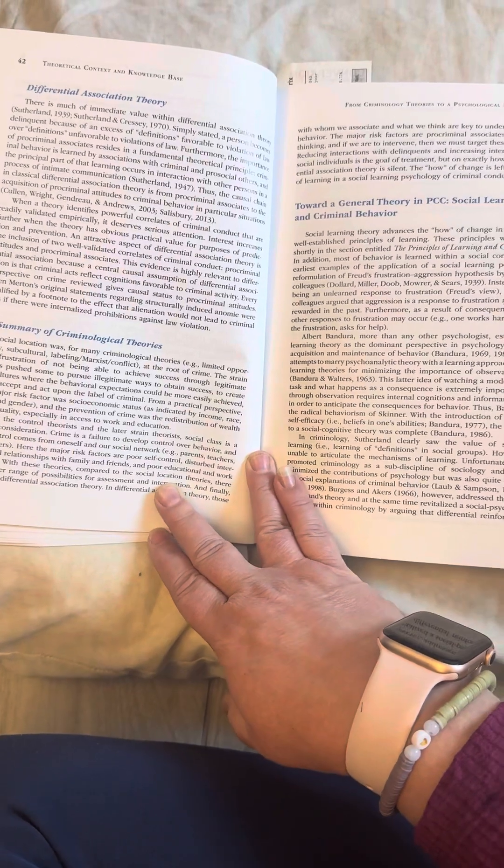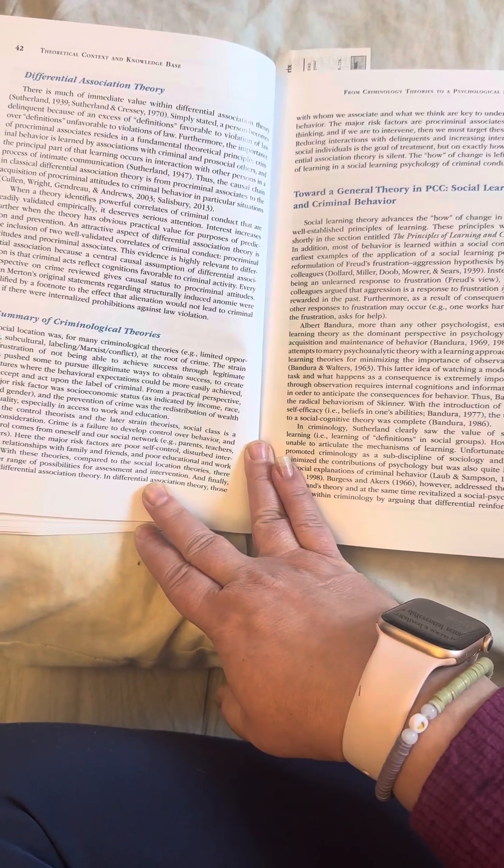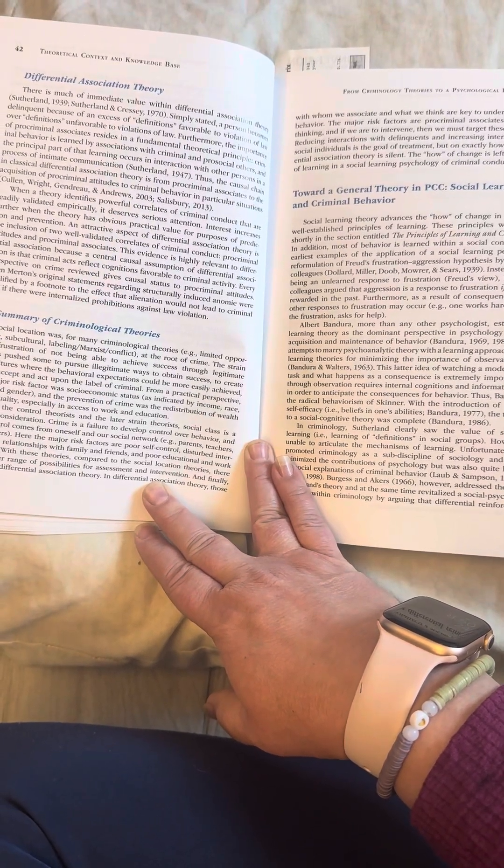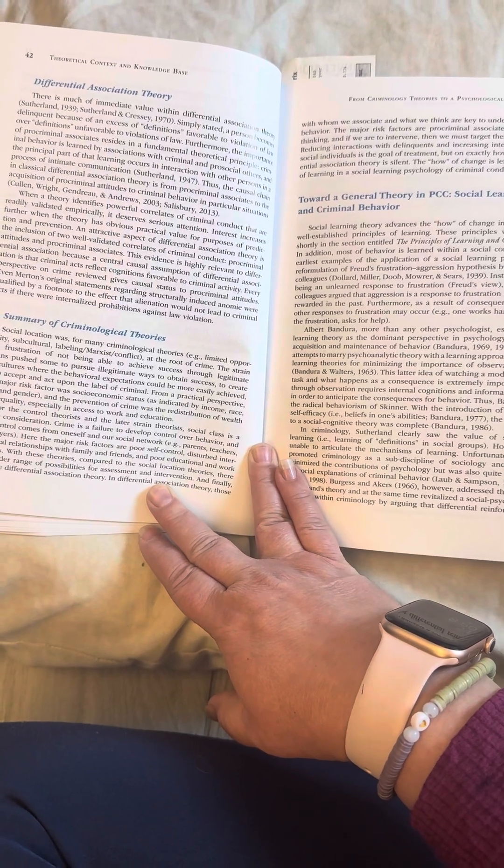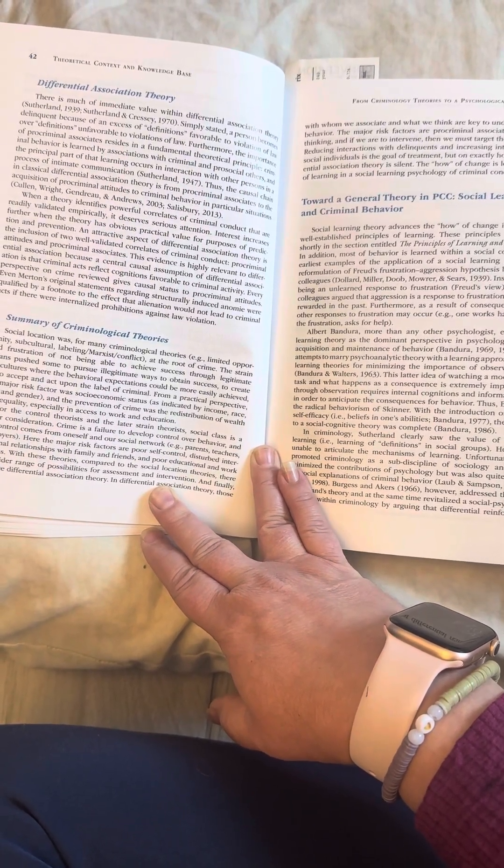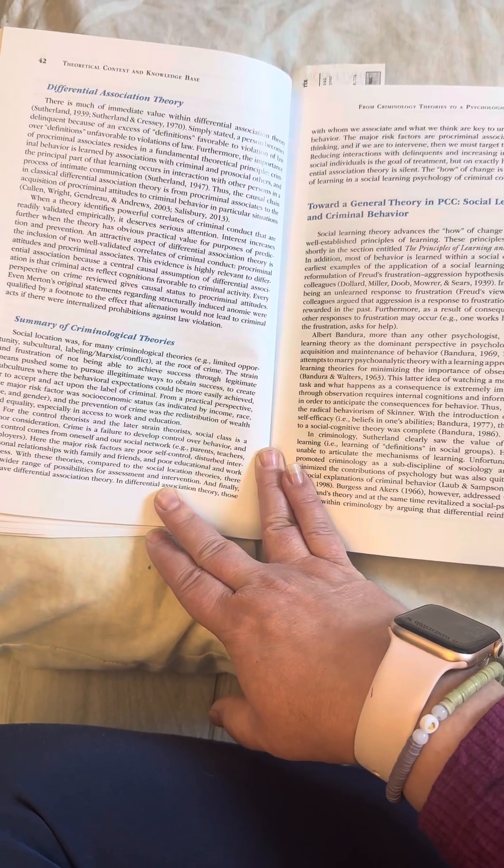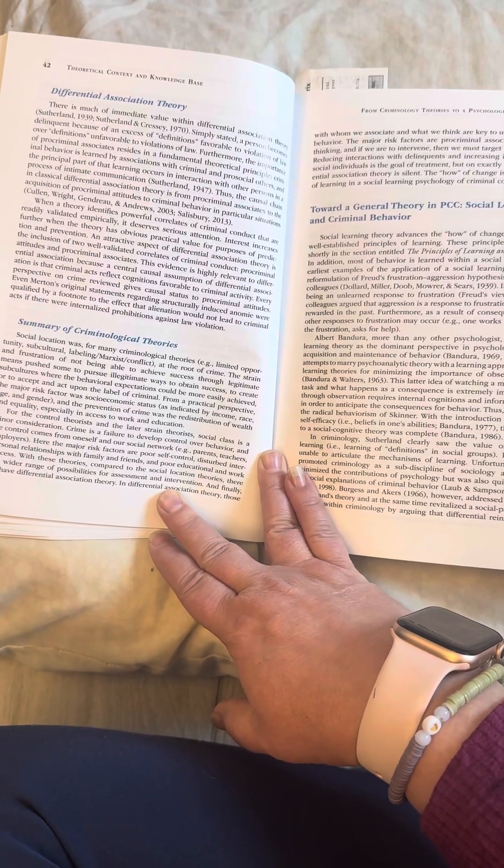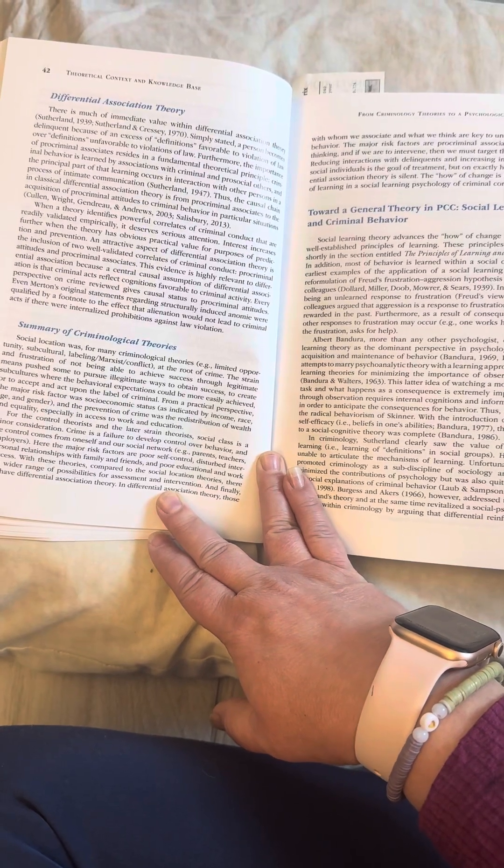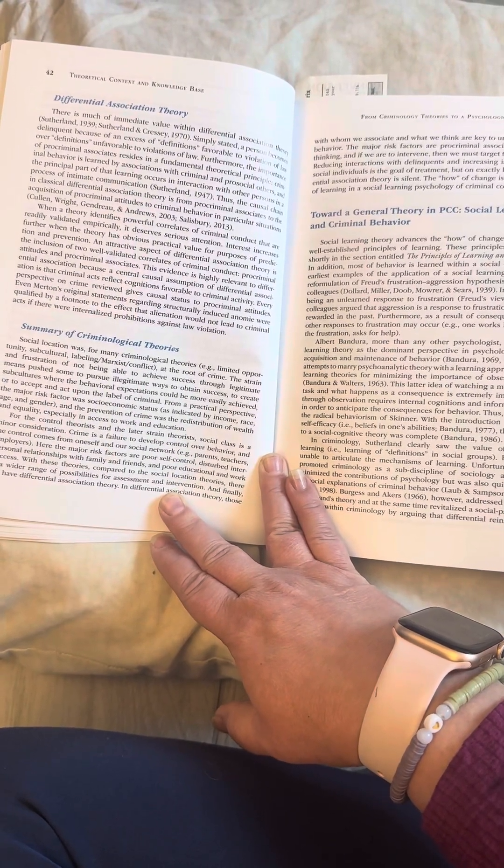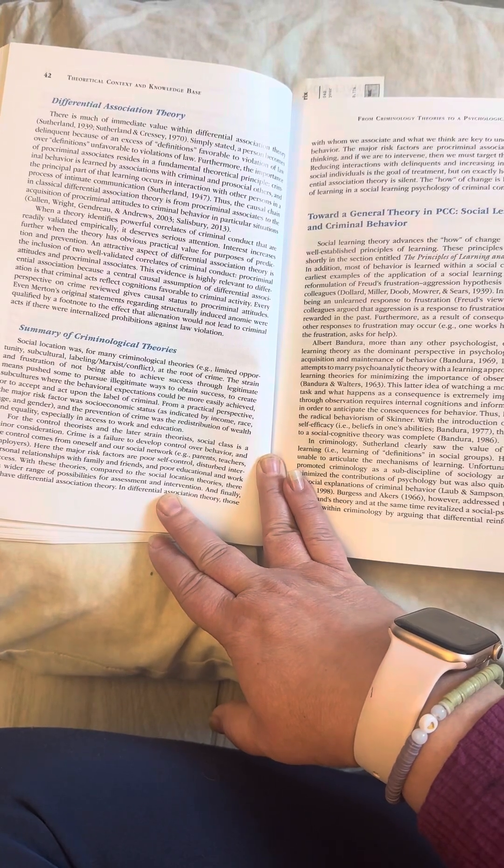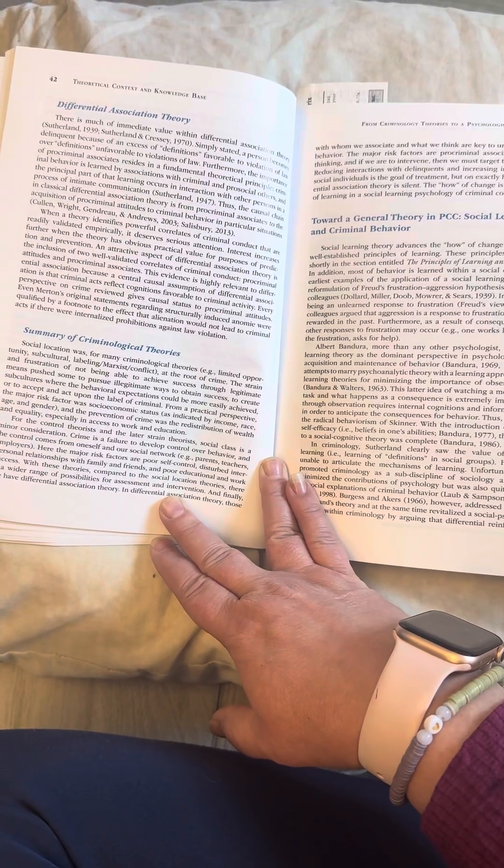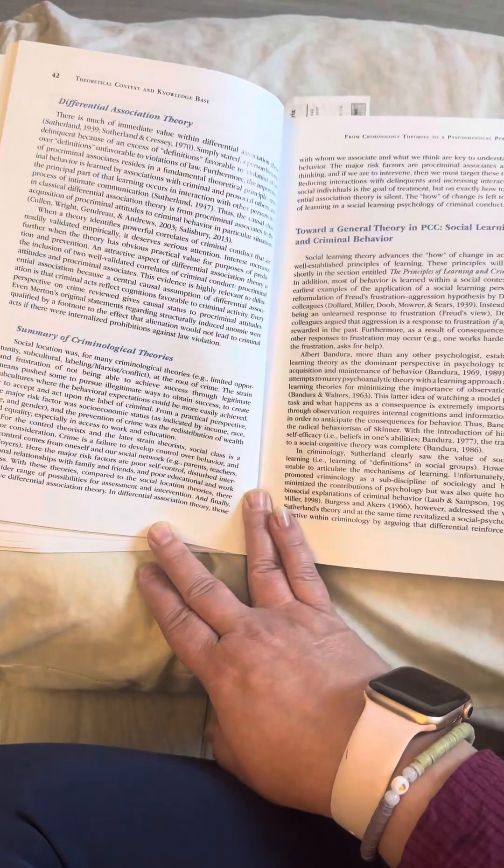Some summary of criminological theories. Social location was, for many criminological theories, example, limited opportunity subculture labeling, Marxist conflict, at the root of the crime. The strain and frustration of not being able to achieve success through the legitimate means pushed some to pursue illegitimate ways to obtain success, to create subcultures where the behavioral expectations could be more easily achieved, or to accept and act upon the label of criminal. From a practical perspective, the major risk factor was socioeconomic status as indicated by income, race, age, and gender, and the prevention of crime was the redistribution of wealth and equality, especially in access to work and education.